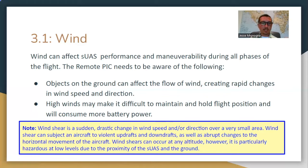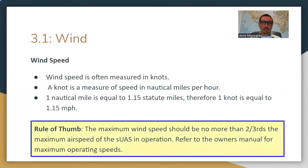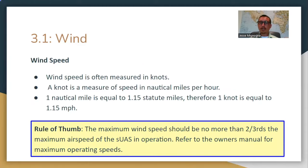Wind shear is particularly hazardous at low levels due to the proximity to the SUAS and the ground — if you get a downdraft pushing you downward and you're close to the ground, you could crash. A good rule of thumb: the maximum wind speed should be no more than two-thirds of the maximum airspeed of the SUAS. So if your drone's maximum speed is 30 mph and the wind is more than 20 mph, it's too windy to fly. Always abide by your UA's owner's manual for maximum operating speed.